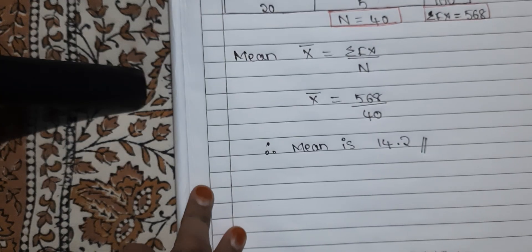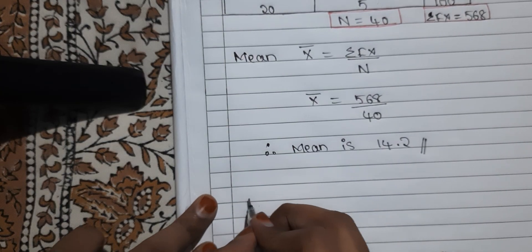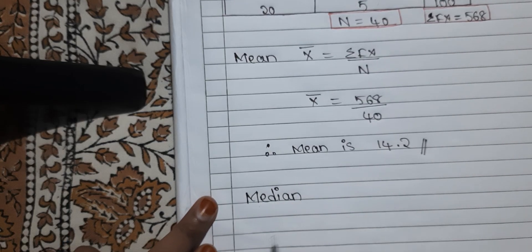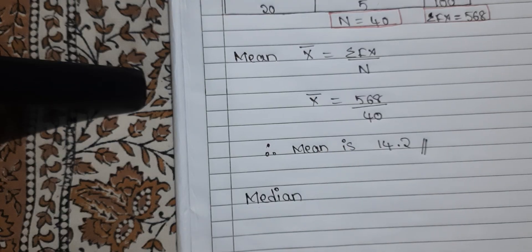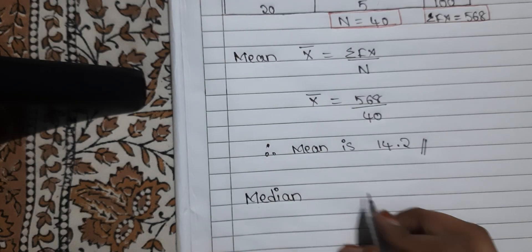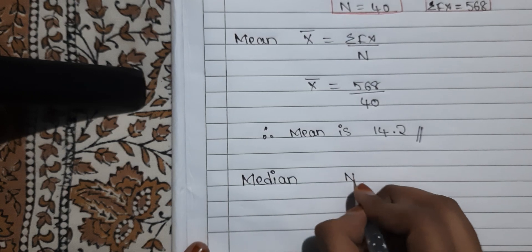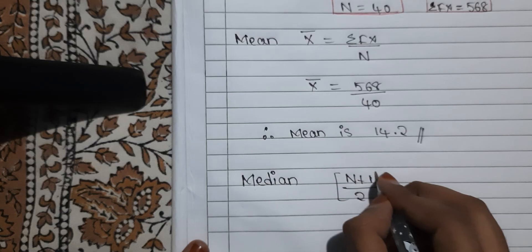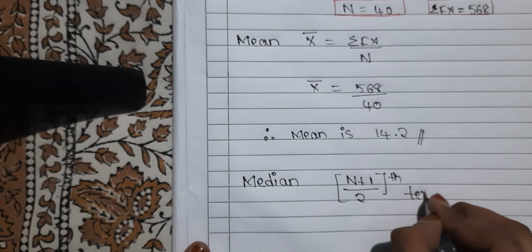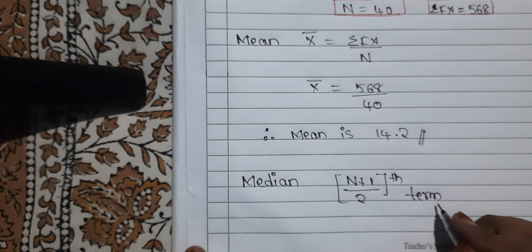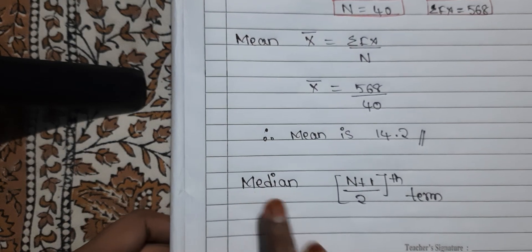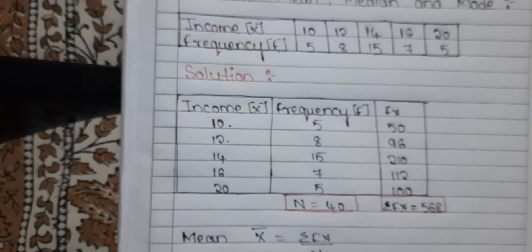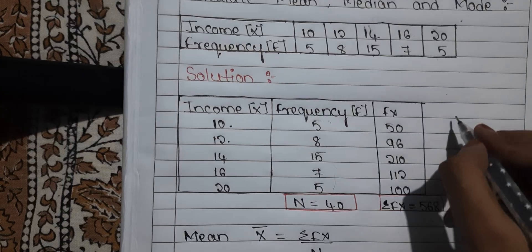We have calculated the mean. Now let us go with the median. The formula of median is the (N+1)/2 th term, also called item. To find the median, we first need to know the cumulative frequency.